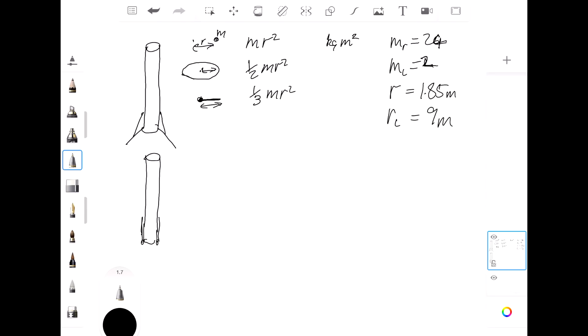So we get three different things to calculate. First of all, let's calculate the moment of inertia of this core. So that is going to be ½ times 24 times 1.85 squared, which is roughly about 41.1. So that's the core.